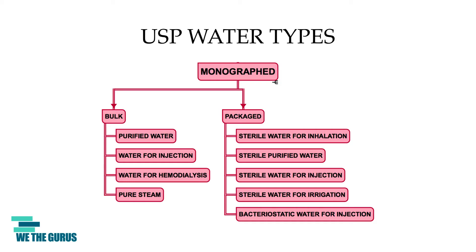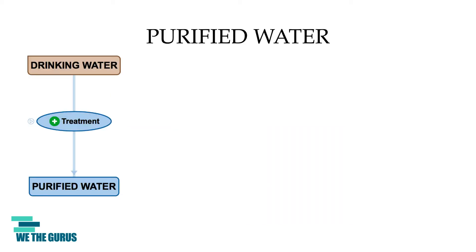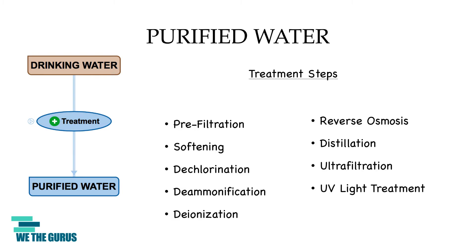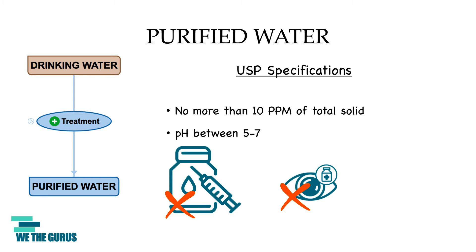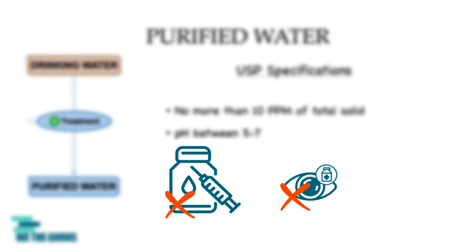The first kind of bulk water is purified water. It is prepared by treatment of a source water such as drinking water or potable water. Depending on the need, typical treatment steps include combinations of processes such as prefiltration, softening, dechlorination, deammonification, deionization, reverse osmosis, distillation, ultrafiltration, and UV light treatment. According to USP specifications, purified water cannot contain more than 10 parts per million of total solids and the pH should be between 5 to 7. It is a bulk product used as an excipient for production of non-parenterals as well as for cleaning of certain equipment. Purified water should not be used in parenteral or ophthalmic products.